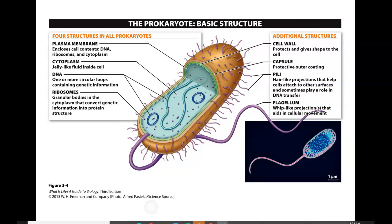Nearly all cells are going to contain DNA, which is deoxyribonucleic acid. We say nearly all because some cells start off with a nucleus with DNA in it, and then eject that nucleus as they perform their job. An example would be a red blood cell — when it first forms it does have a nucleus, but it gets rid of that nucleus before it becomes a mature functioning red blood cell.